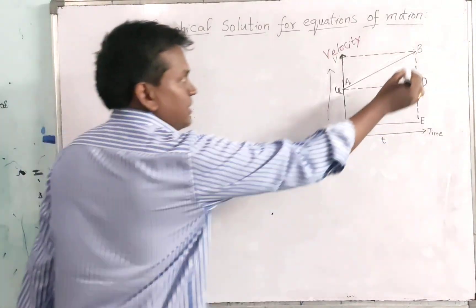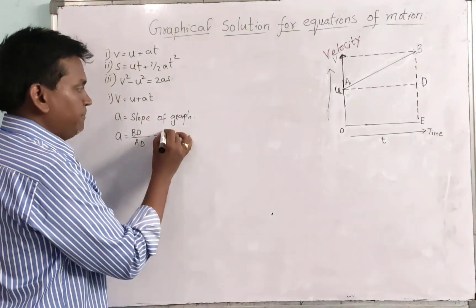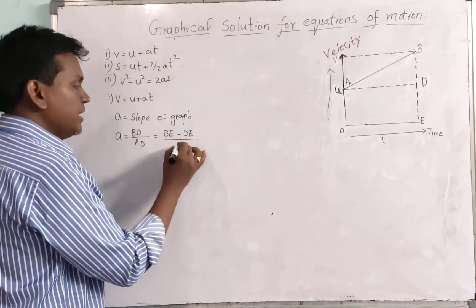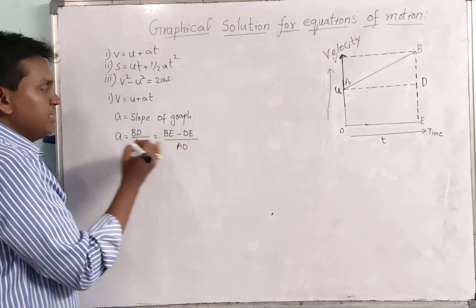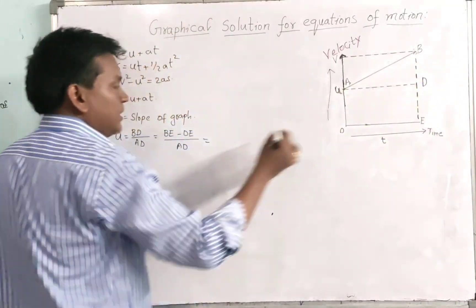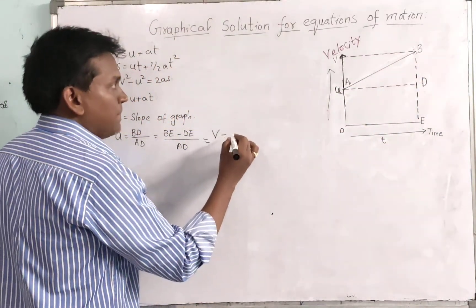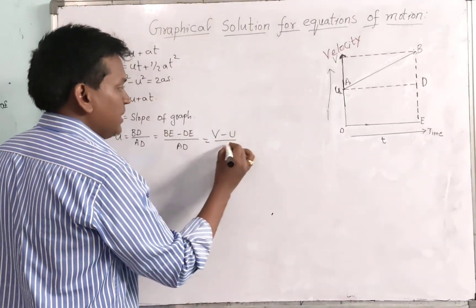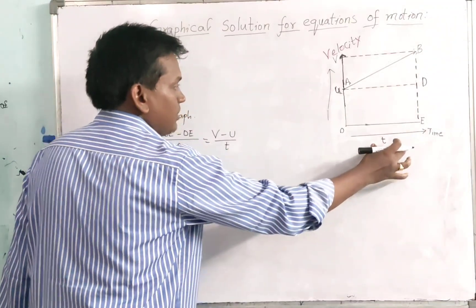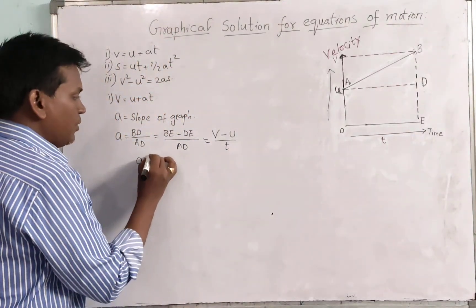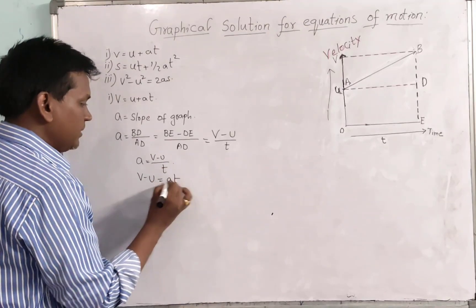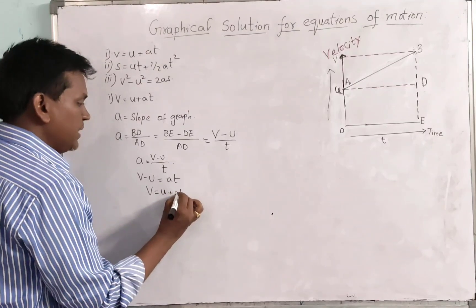BD can be written as BE minus DE. So BD / AD = (BE - DE) / AD. Since BE is the final velocity V and DE is the initial velocity U, and AD equals OE which is time T, we get acceleration A = (V - U) / T.